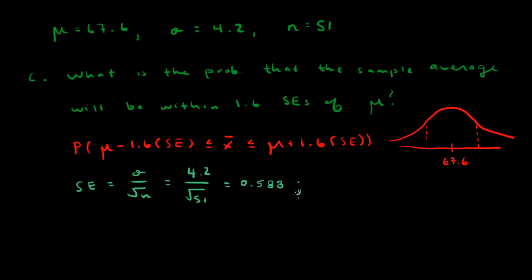With this information we can say that x bar, the sample average, is normally distributed with a mean of 67.6 and a standard error of 0.588. The mean is 67.6 because the population mean was 67.6. Standard error is 0.588 because that's what we just calculated. And it's normal because the sample size is greater than or equal to 30.